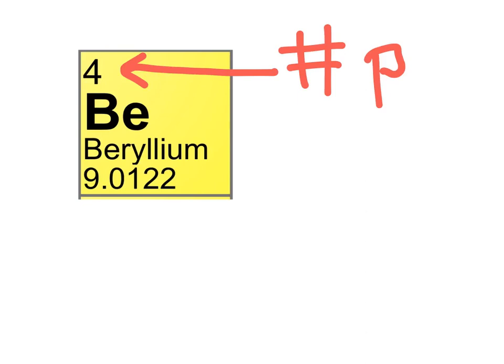In a neutral atom, that is an atom with a charge of zero, it's going to have the same number of electrons as it does protons. Every plus needs a minus.